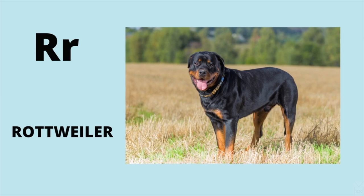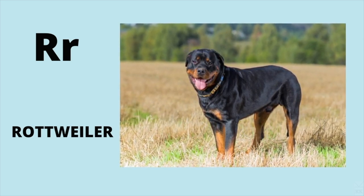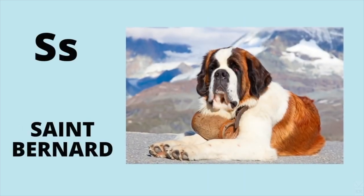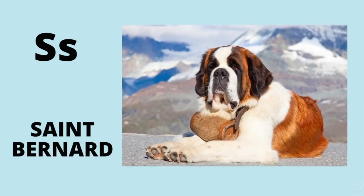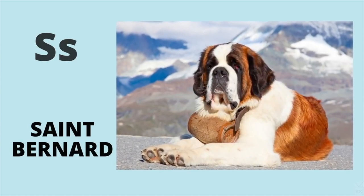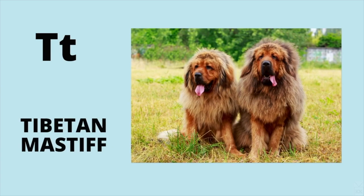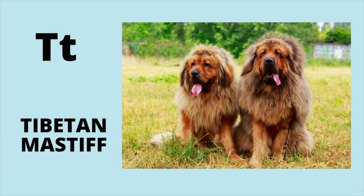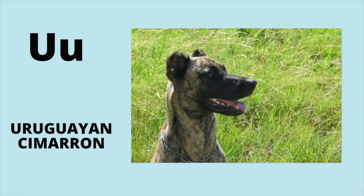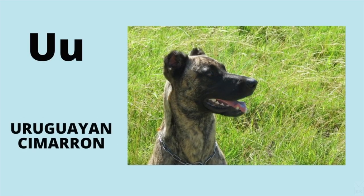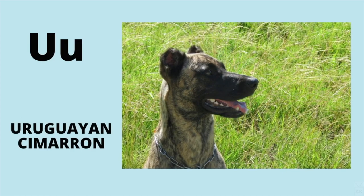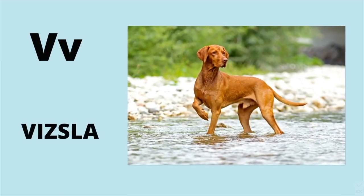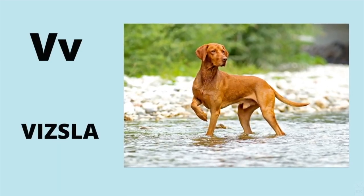R is for Rottweiler. R, Rottweiler. S is for Saint Bernard. S, Saint Bernard. T is for Tibetan Mastiff. T, Tibetan Mastiff. U is for Uruguayan Cimarron. U, Uruguayan Cimarron. V is for Vizsla. B, Vizsla.